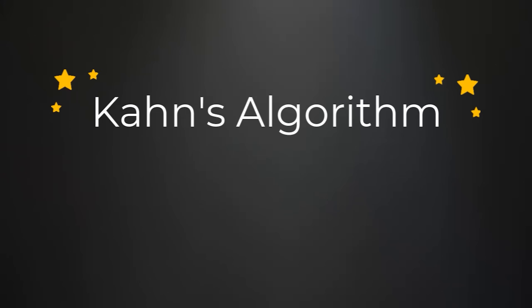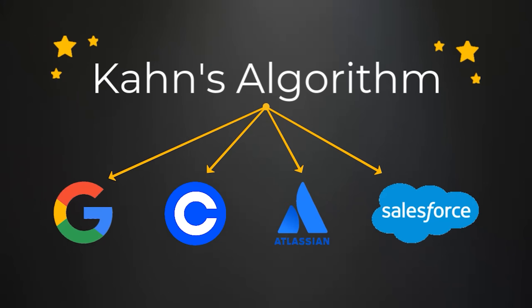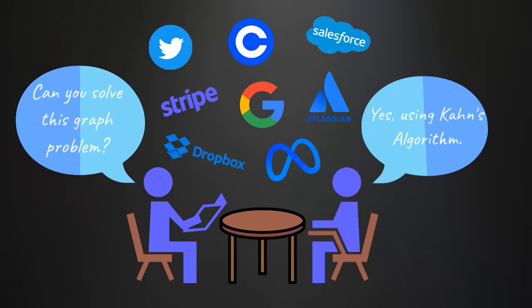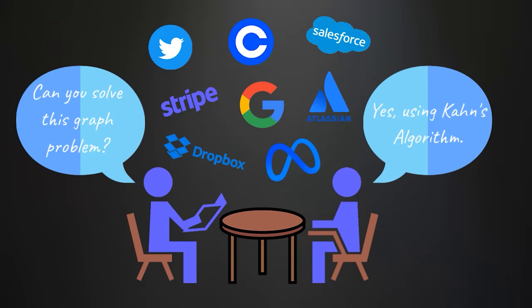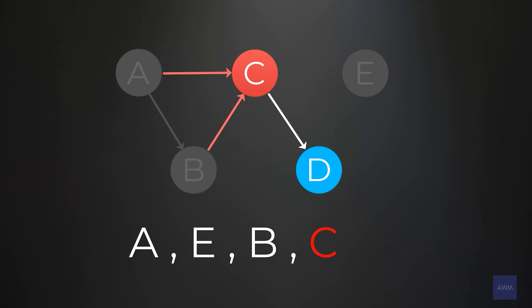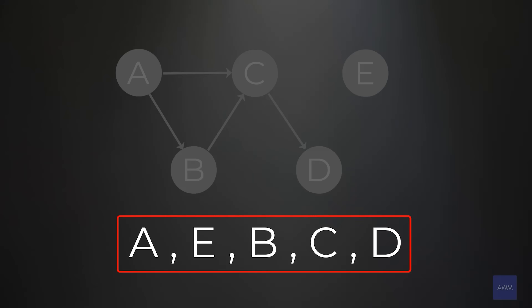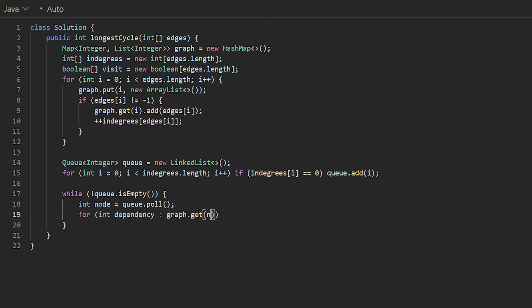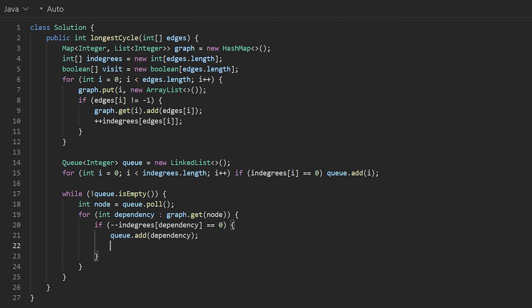I credit Kahn's algorithm for getting me multiple big tech job offers. In 2022, I wanted to finally try my hand at working for a major tech company, so I set up a bunch of interviews. One thing I came to realize is that at nearly every single company on-site that I had, I was asked a problem that could be solved with Kahn's algorithm, and these interviews always ended up being my best performance, leading me to an offer.